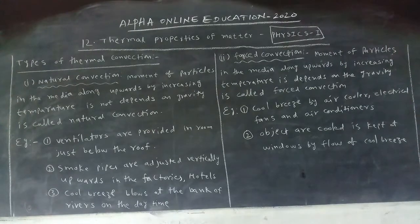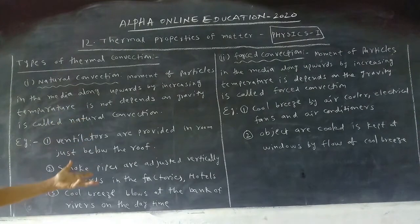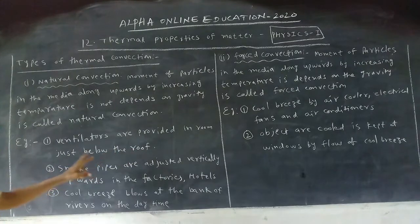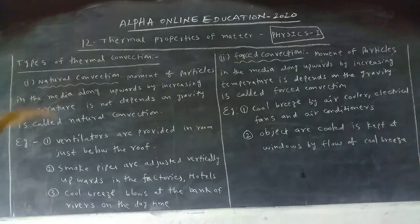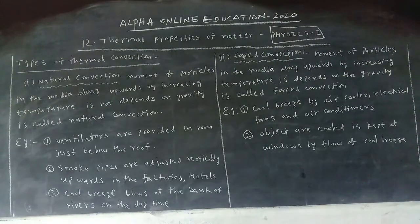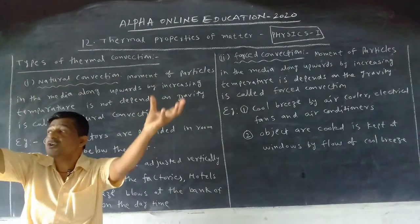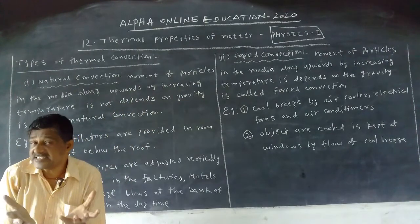Now, what is the example? This is very important for examination. Why are ventilators provided just below the roof? Ventilators are provided in the room just below the roof. Why are the ventilators provided just below the roof? Through those ventilators, hot gases are released. Why hot gases?